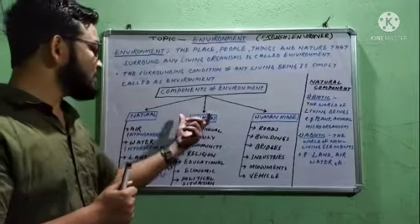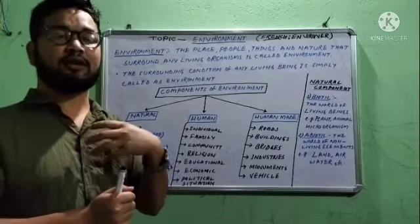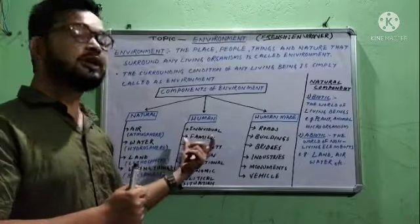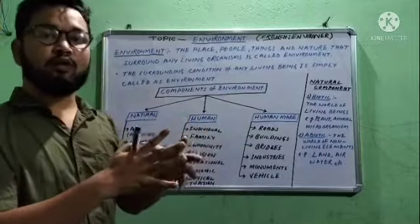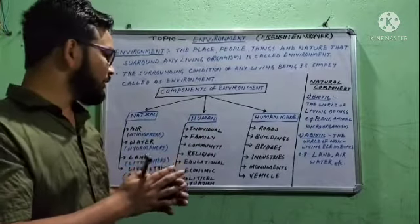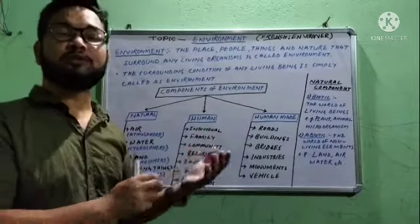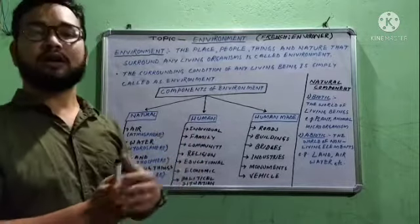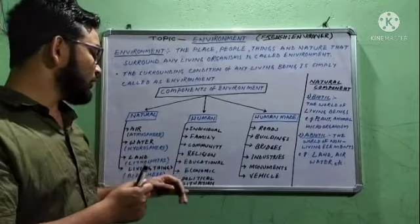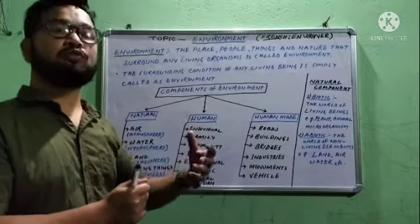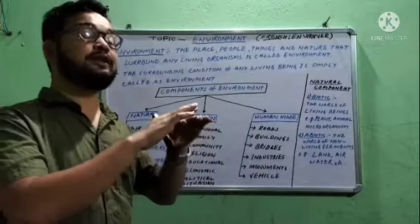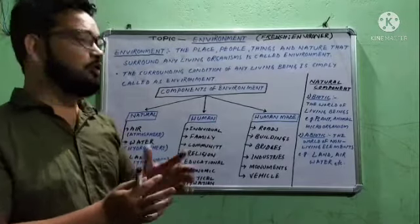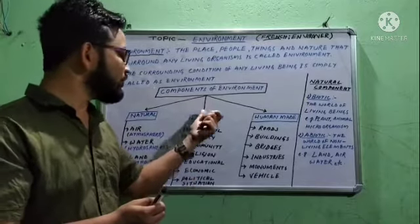The human component is a separate component of the environment. Under human, you will see the individual — one person personally is also a component. My family is a component. Community — my family and my neighborhood — is a part of human environment. Religion — whether Hindu, Muslim, or Christian — is also a human component. Education — studying in school — is a human component. Political and economic aspects, such as where your parents work and earn money, are also human components of the environment.